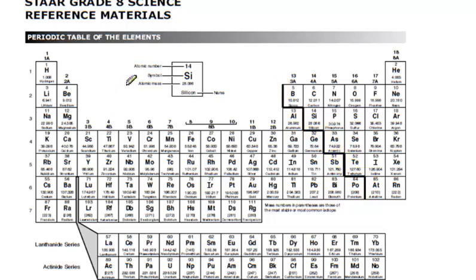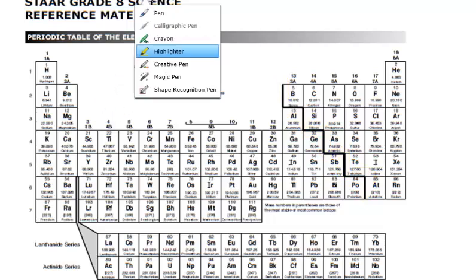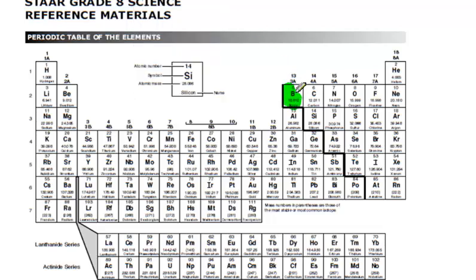The first thing we're going to talk about is where they are. Anything that is touching that bold line, so boron, silicon, arsenic, tellurium, astatine, polonium, antimony, and germanium, all of those are metalloids. The exception that is touching the line is aluminum. That is not a metalloid.